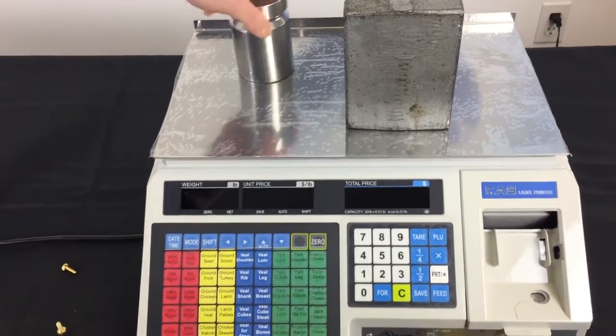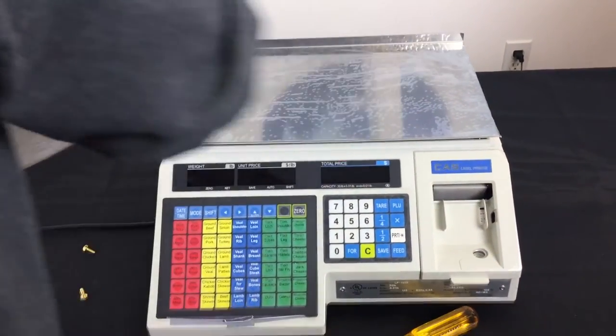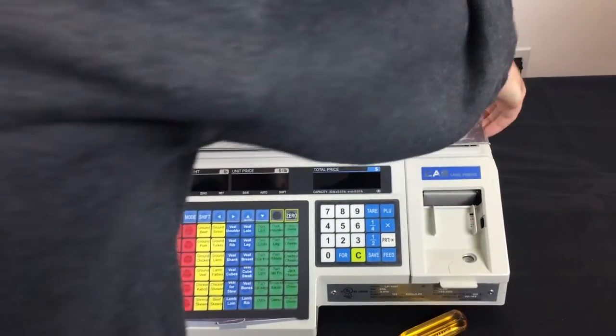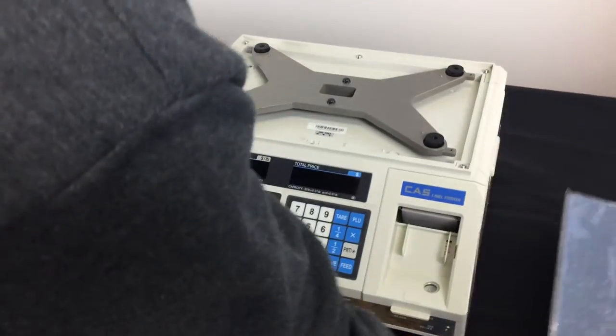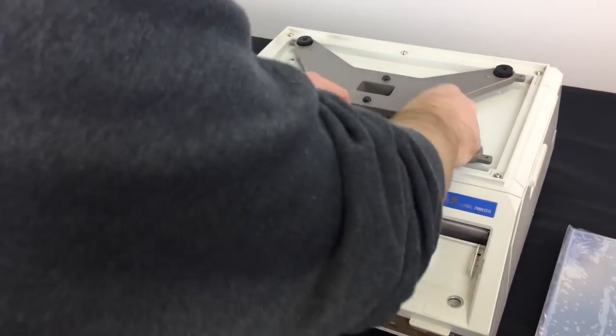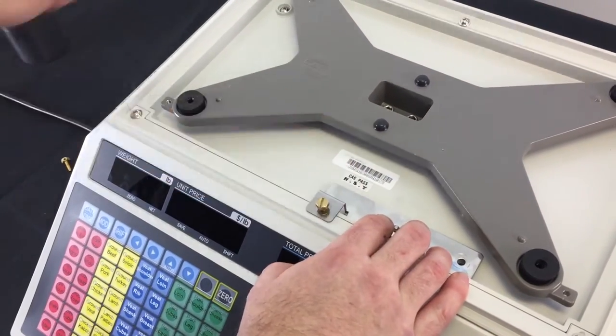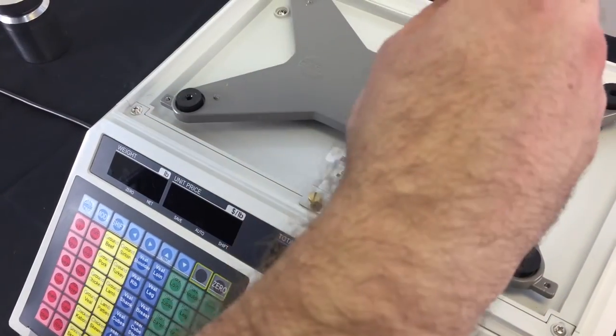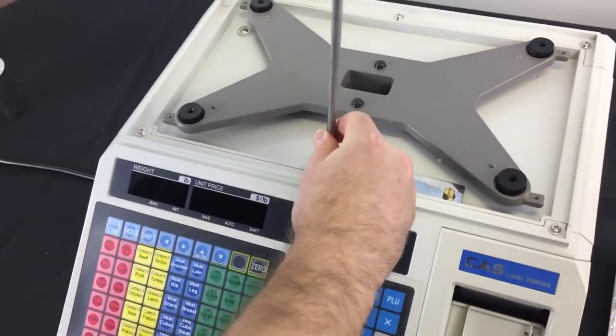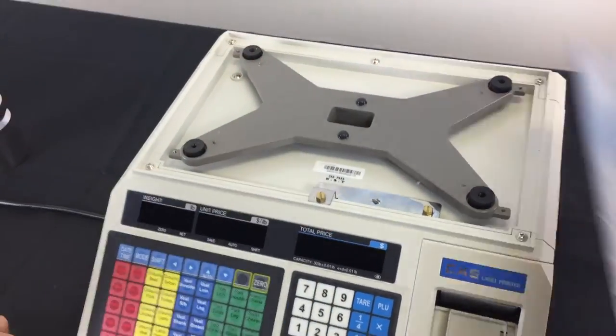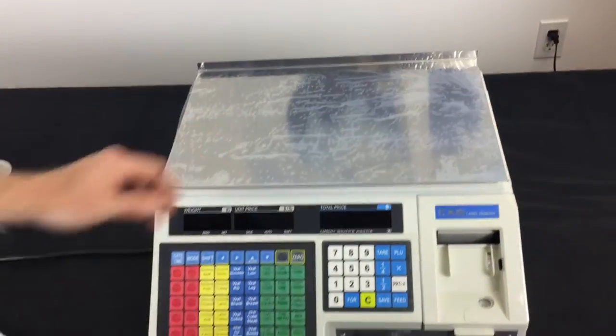Now we're gonna remove our weight as the last step to put this calibration plate back. Remove that platter. Place that plate back on top of the scale. Get your sealing bolts. Make sure you get those back in. Place your platter back on the scale. And you're all set and ready to go.